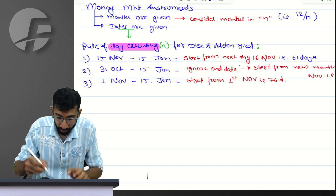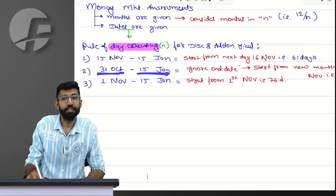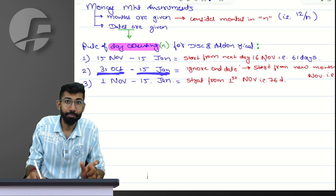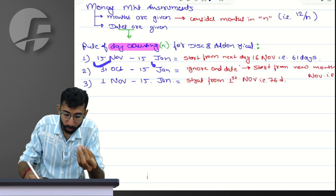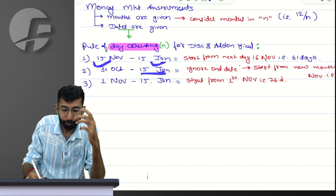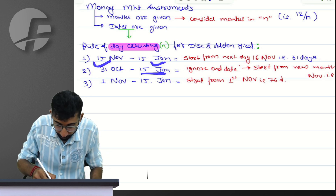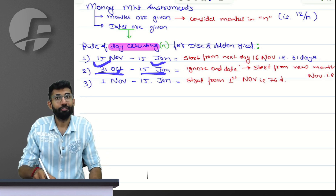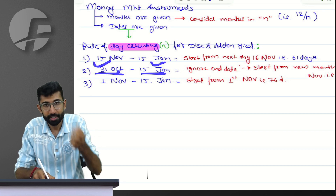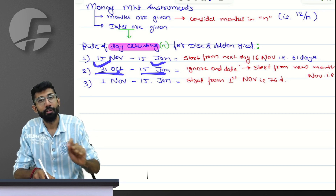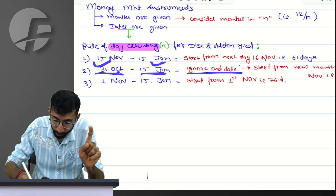Similarly, from 31st October to 15th January is the time period for the security — you bought the security on 31st October and it will get redeemed on 15th January. From 31st October, if I have purchased it, as the natural rule says, will I count that day? No — my counting will start from 1st November.